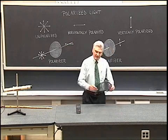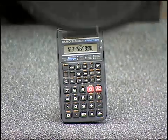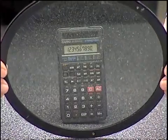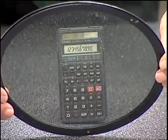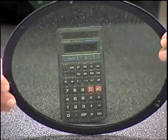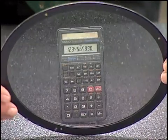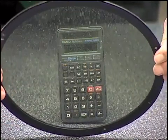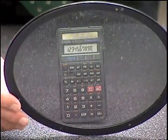I'm going to take a polarizing sheet here, place it in front of that calculator, and watch those numbers disappear as I rotate this polarizer. It blacks out, and then the numbers come back again. And then it blacks out, and the numbers come back again.